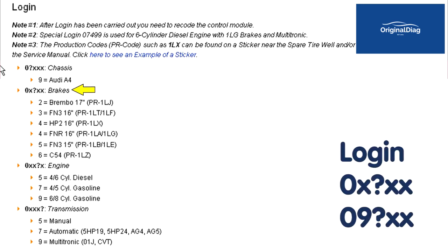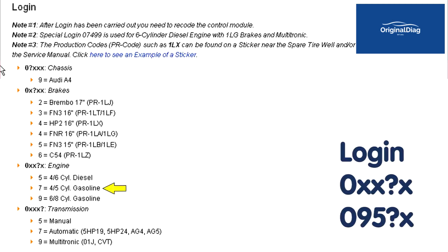Next we see 0x question mark xx brakes. This is where we used the PR code for the brakes. It was 1LE. So I match up the 1LE in the list of options. 1LE is a value of 5. So the next digit of my login is 5. For 0xxx question mark x engine, this 2003 Audi A4 has a 4 cylinder gasoline engine. According to the chart then, the next digit of the login is a 7.